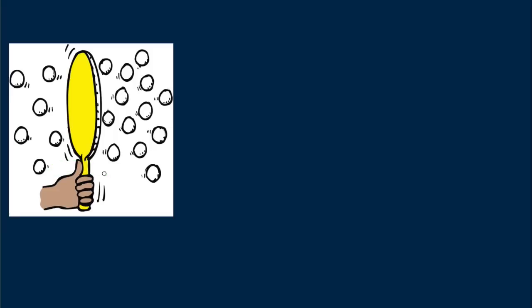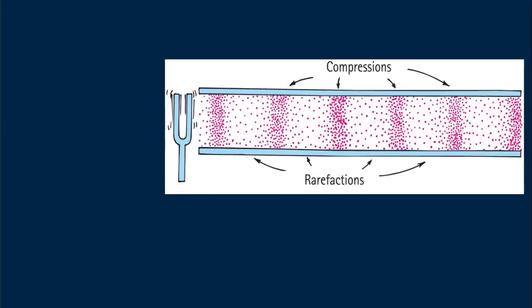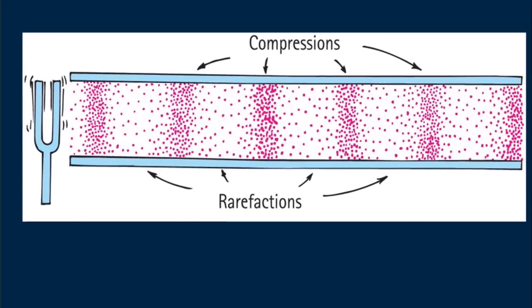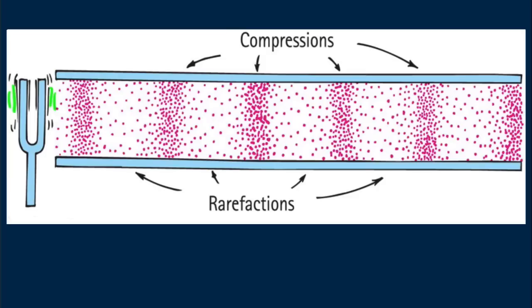Shake a paddle to and fro in the midst of ping pong balls and you produce regions of compression and rarefaction. A vibrating tuning fork does the same.